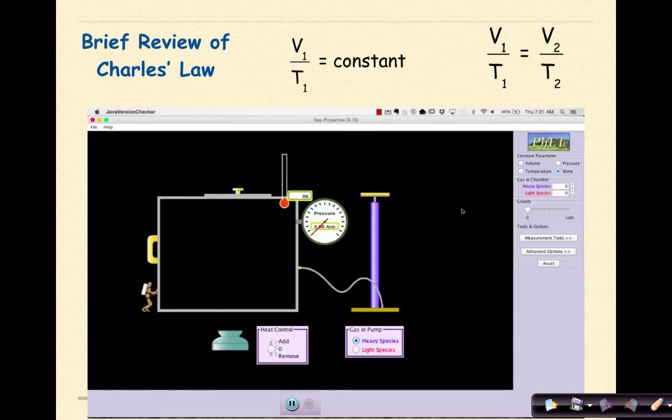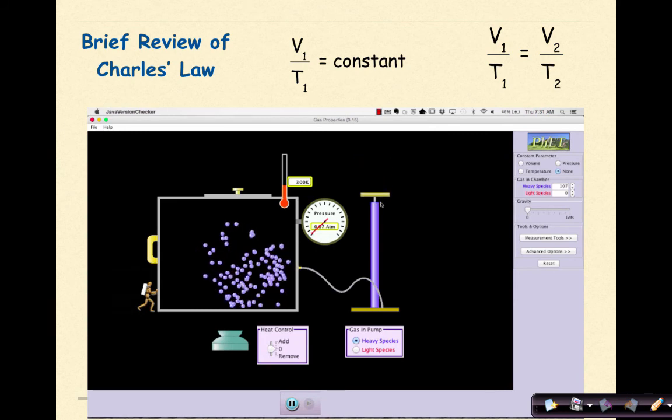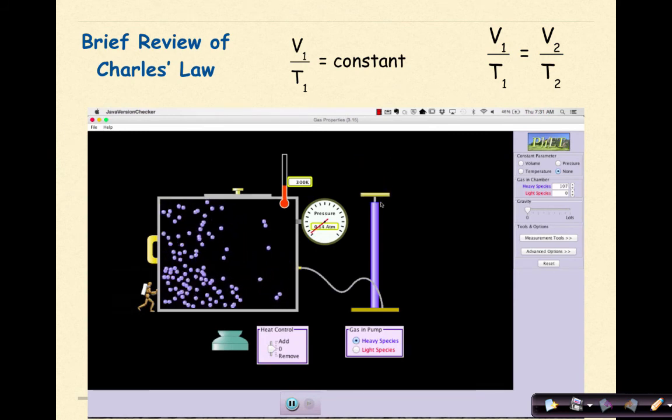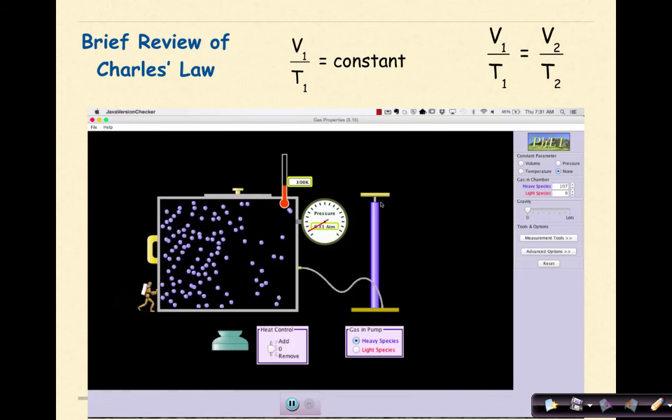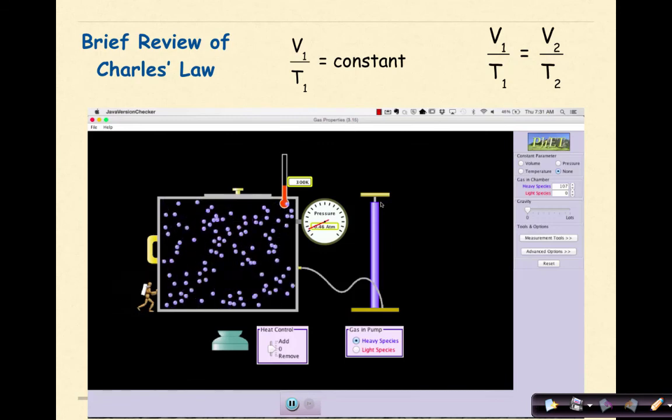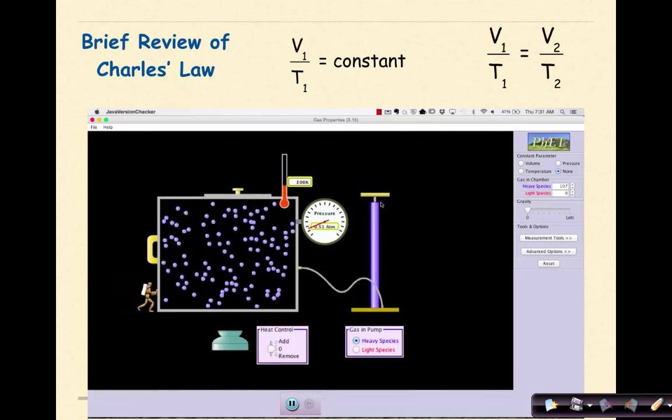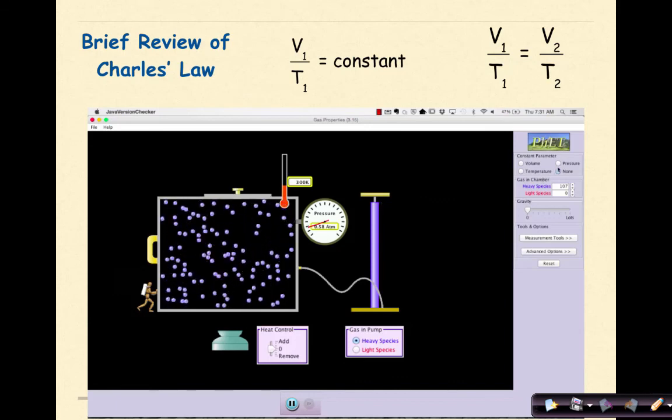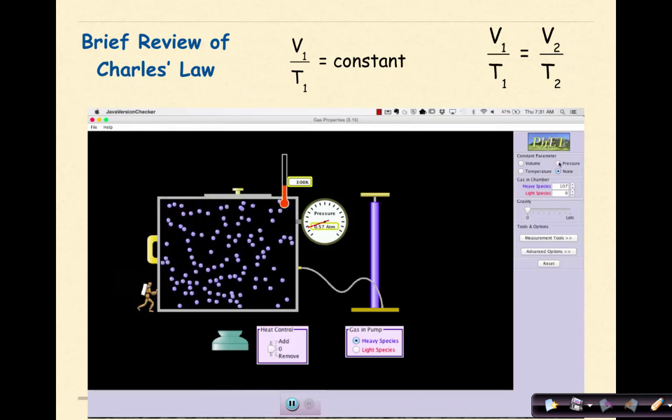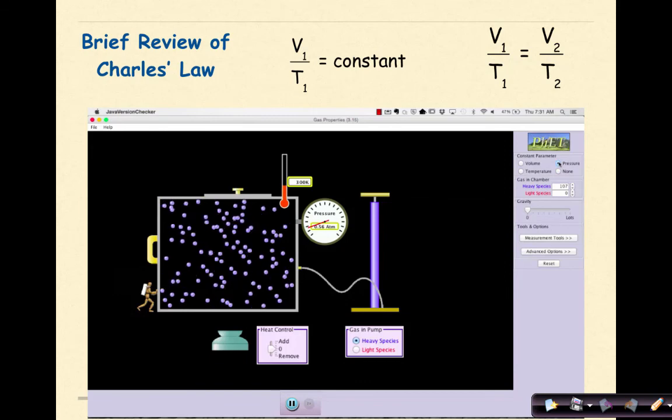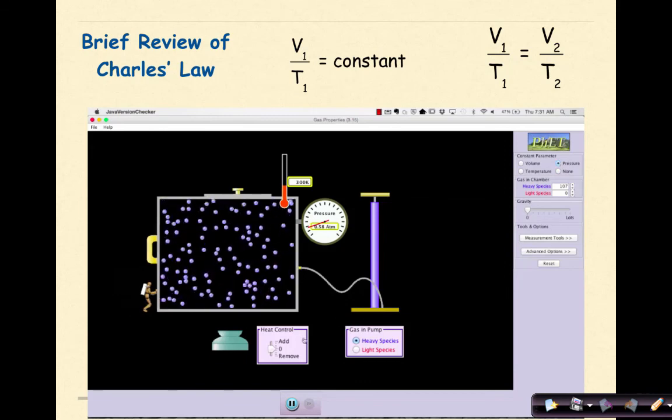So we're going to start off by adding some gas molecules to this chamber, and we will wait for our pressure to become constant. We're going to watch the pressure gauge, and then we're going to go over to the constant parameter and make sure that pressure remains constant.